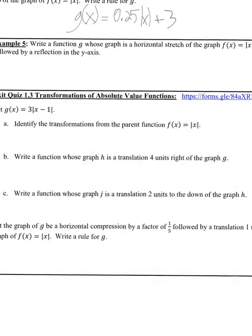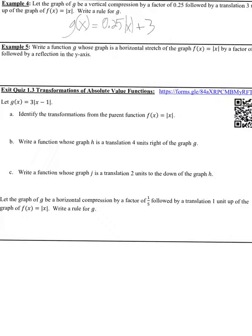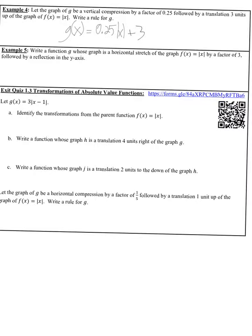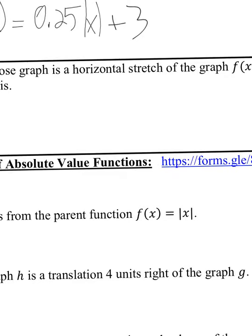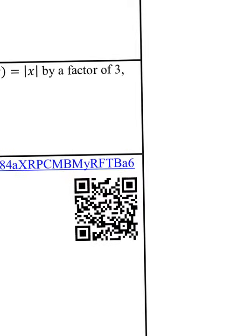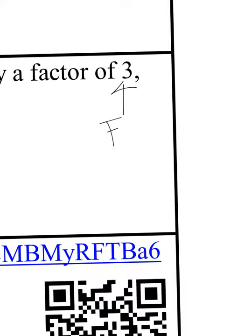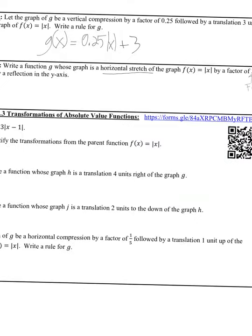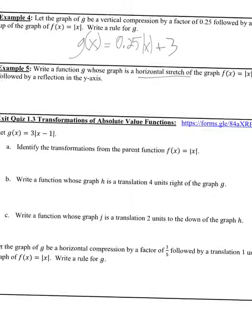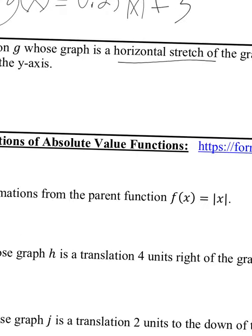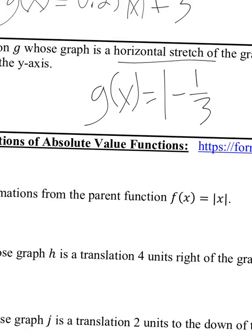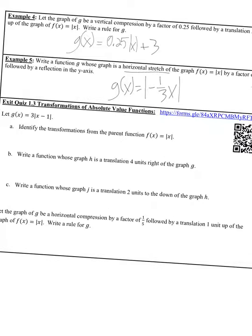Example 5: write a function G whose graph is a horizontal stretch of f of x equals the absolute value of x by a factor of 3, followed by a reflection in the Y-axis. Anytime you see horizontal, you flip the number — so 3 becomes one-third. A Y-axis reflection means a negative on the inside. So G of x equals the absolute value of negative one-third x.